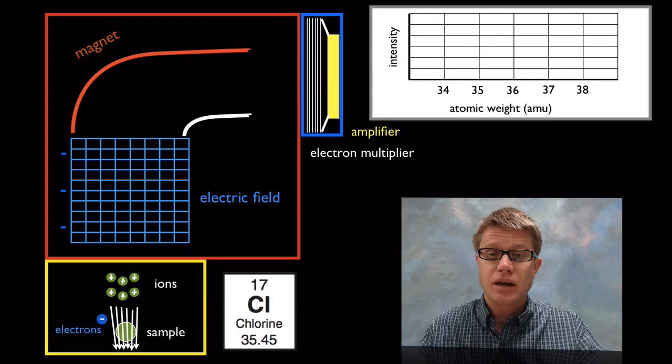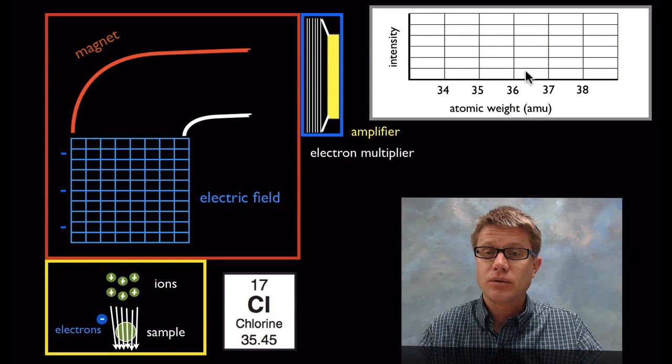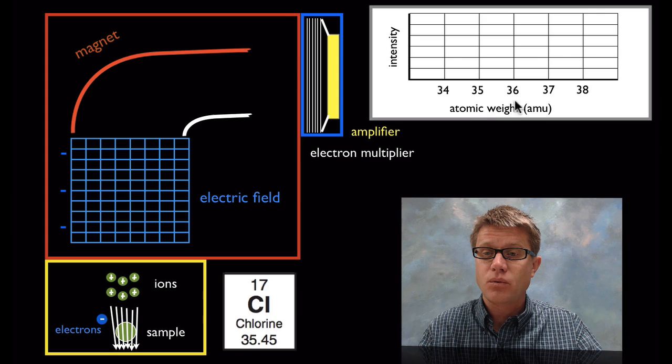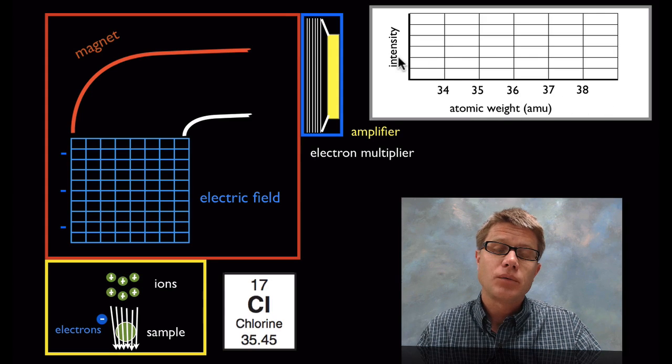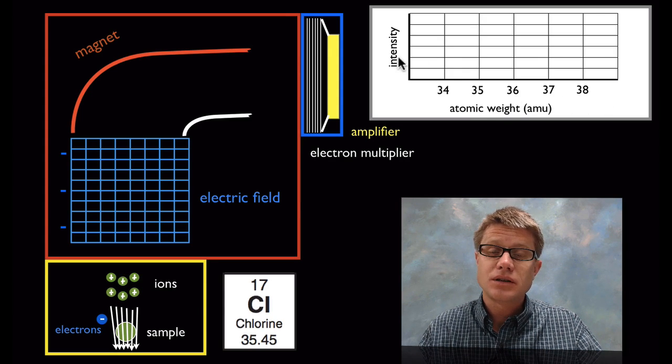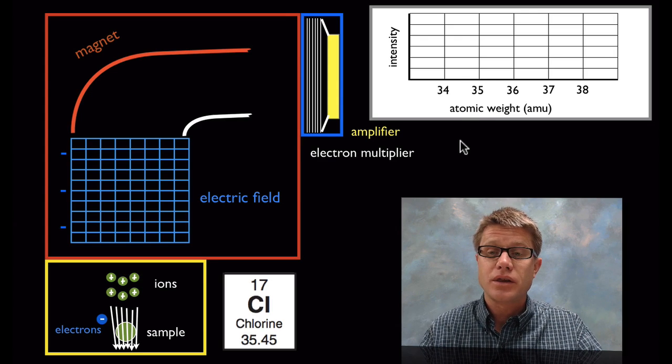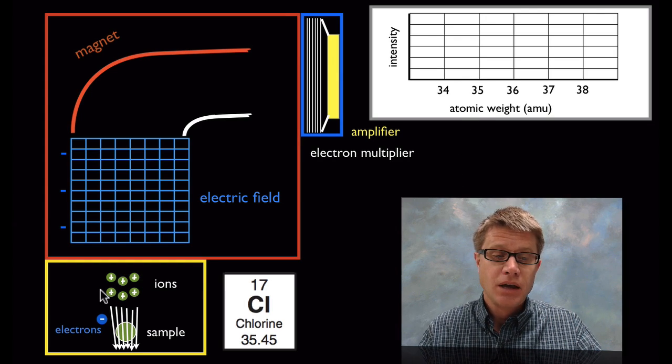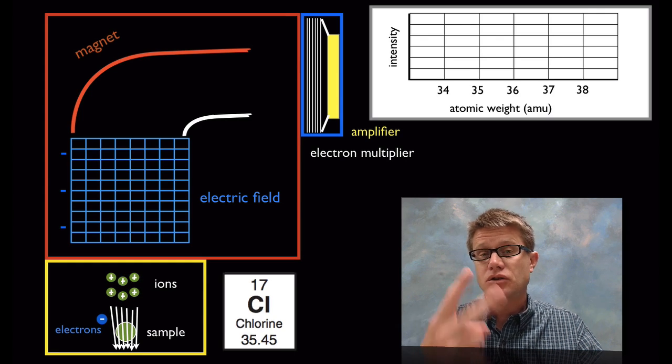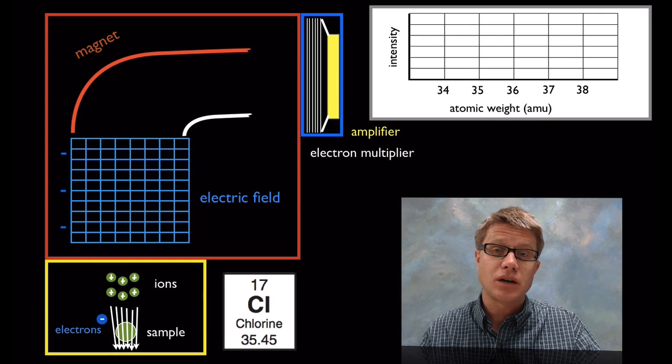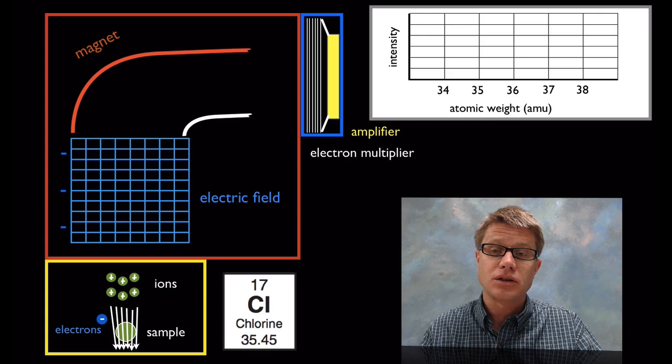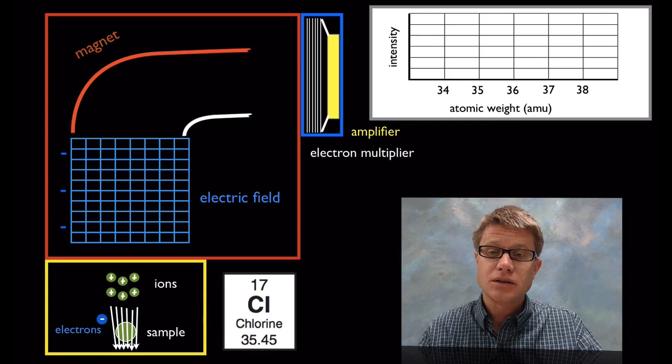Now let's actually get to some sampling. This is what it's going to look like when we create a spectrum. We're going to have the different weights across the bottom, and then we're going to have the intensity. Wherever the intensity is high we're going to have peaks. That means we have a lot of ions with that specific atomic weight. Let's try chlorine. We're going to put chlorine through here. Chlorine really only has two stable isotopes: chlorine-35 and chlorine-37. Let's watch and see what happens as we send this chlorine through the mass spec.